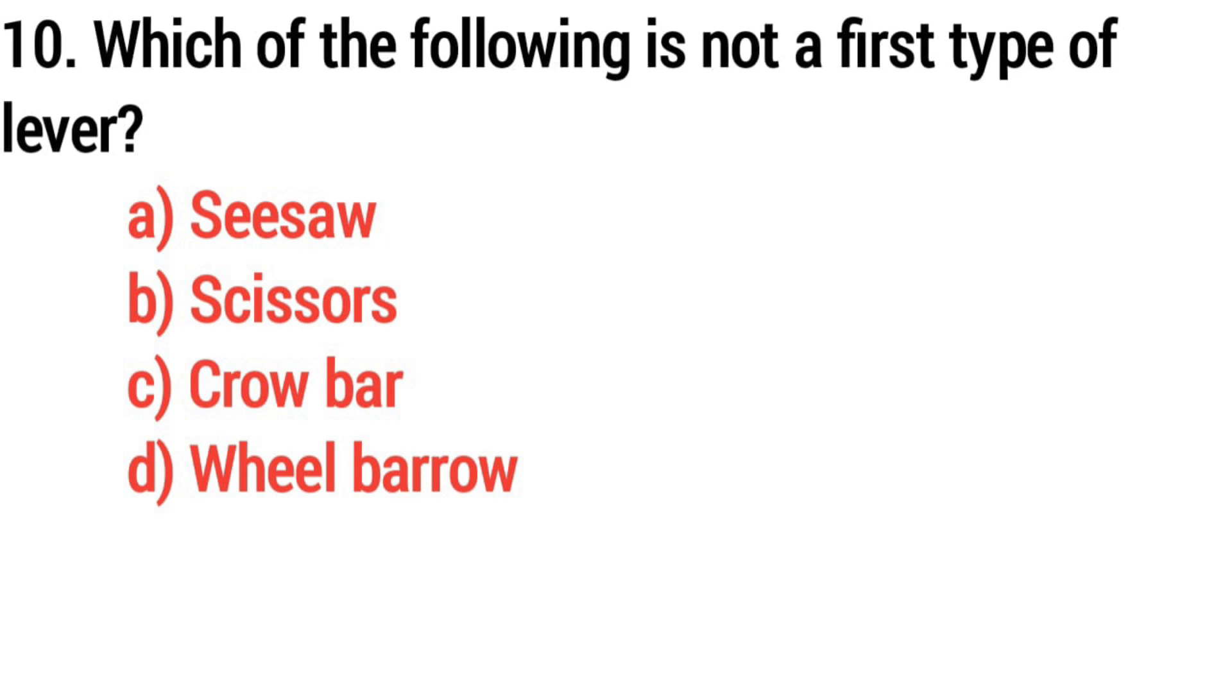Question 10. Which of the following is not a first type of lever? Answer: Option D, Wheelbarrow.